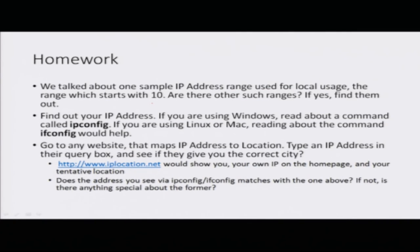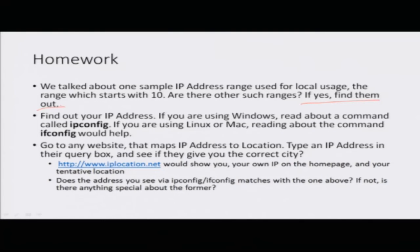For homework: we saw that any IP address starting with 10 is a local address — there are actually three local address ranges in total, and you should find the other two. Also, find out your own IP address using operating system commands: in Windows use ipconfig, and in Linux or Mac use ifconfig. Then go to a website like iplocation.net, which will show you your IP address and your location on its home page.